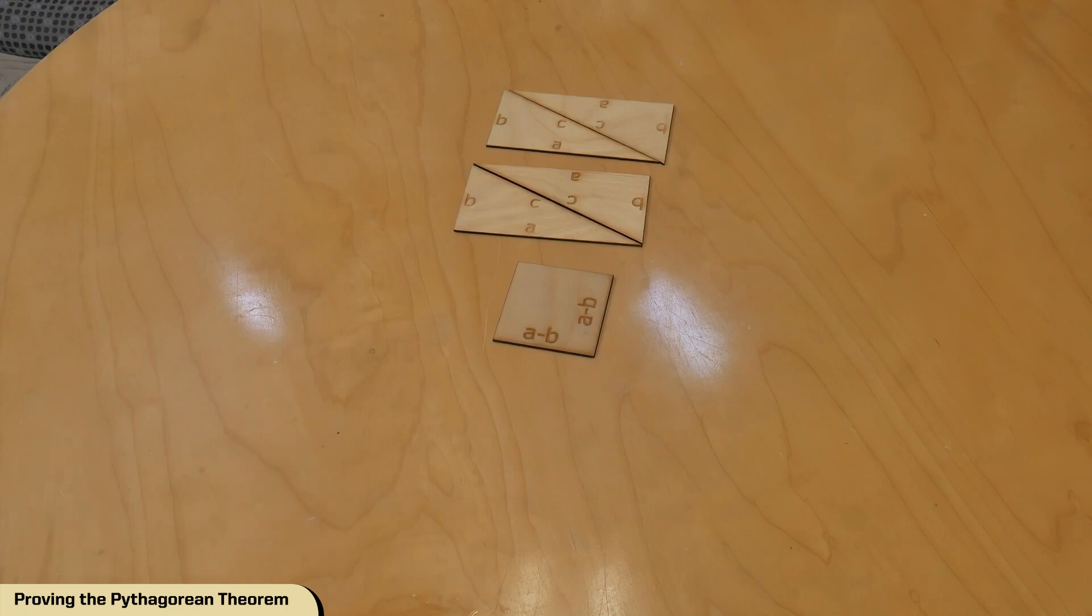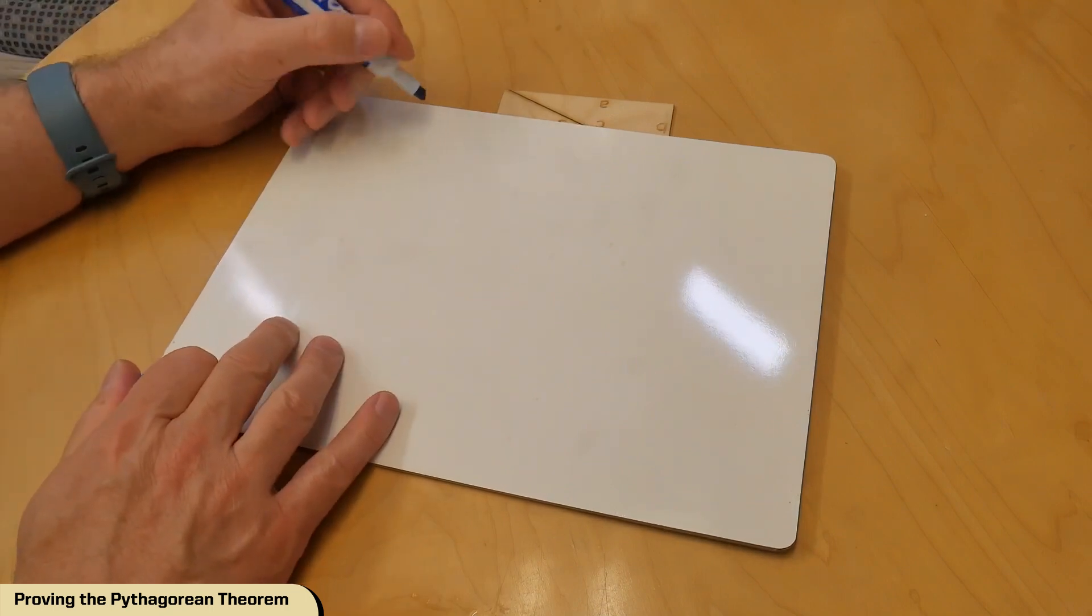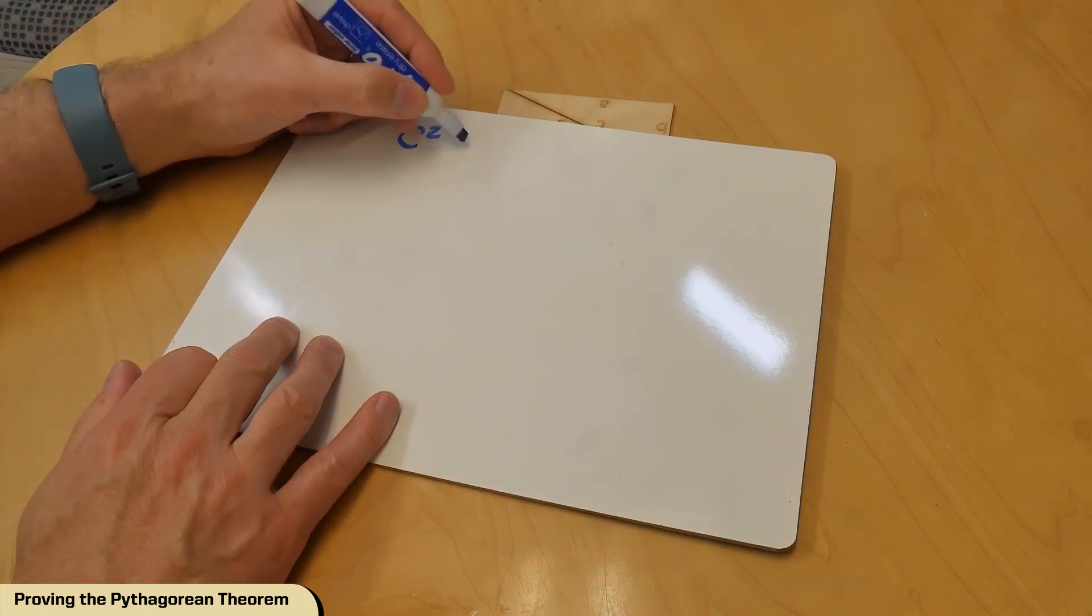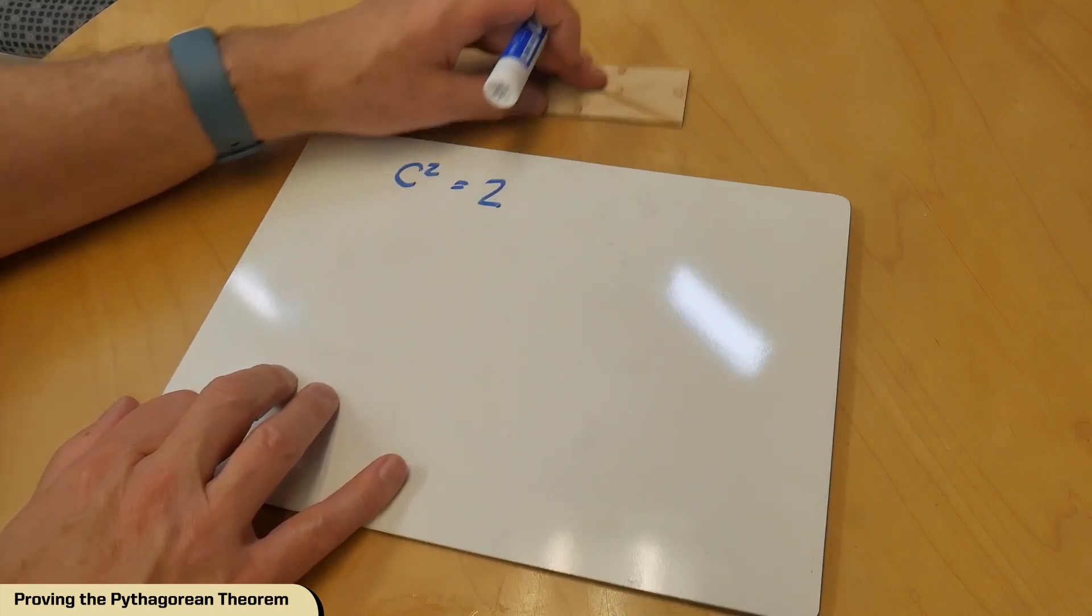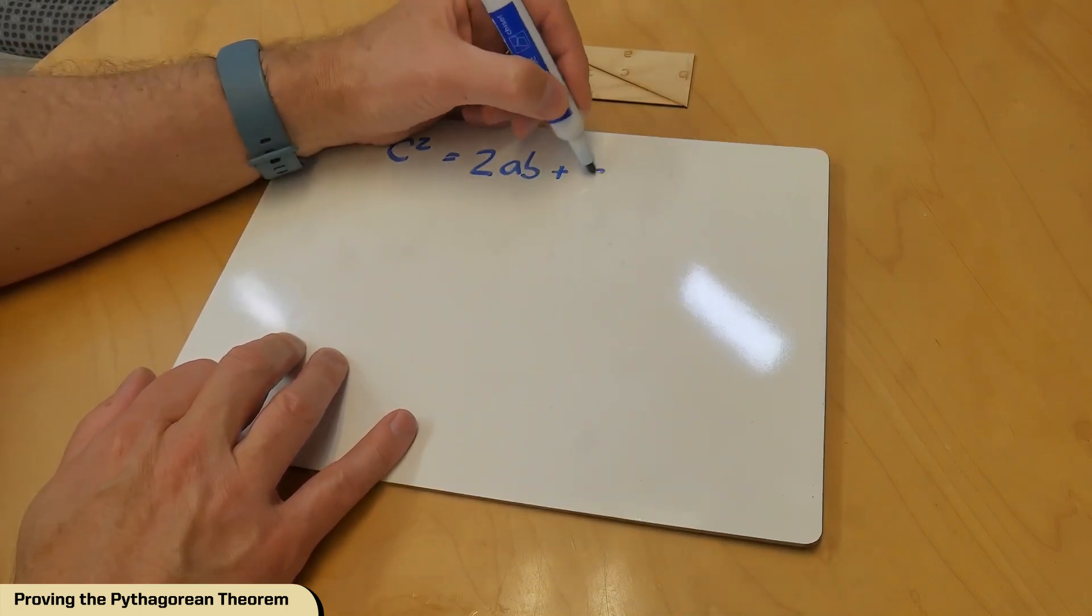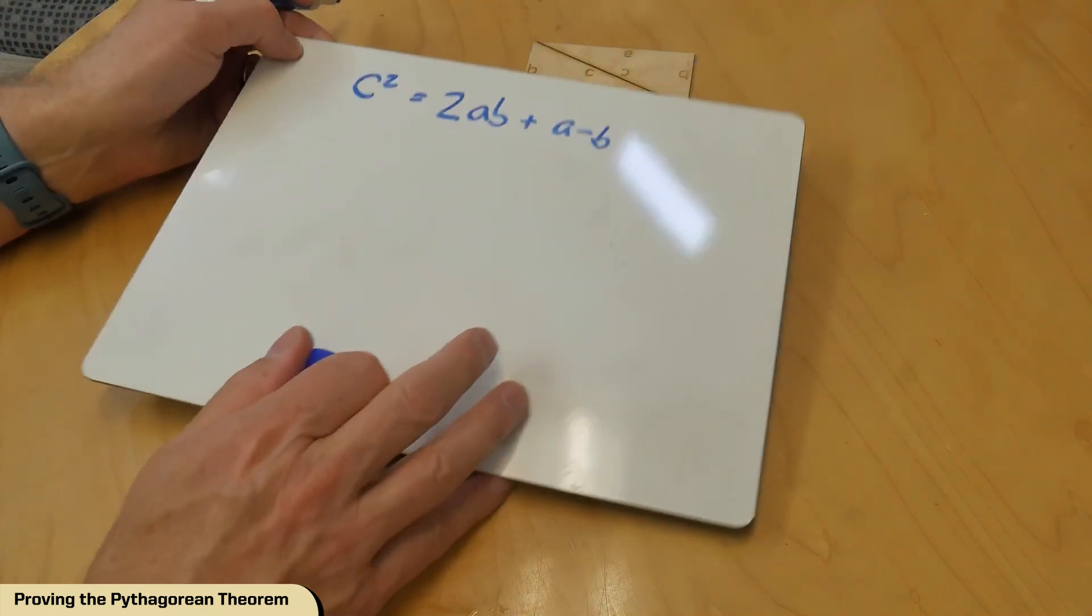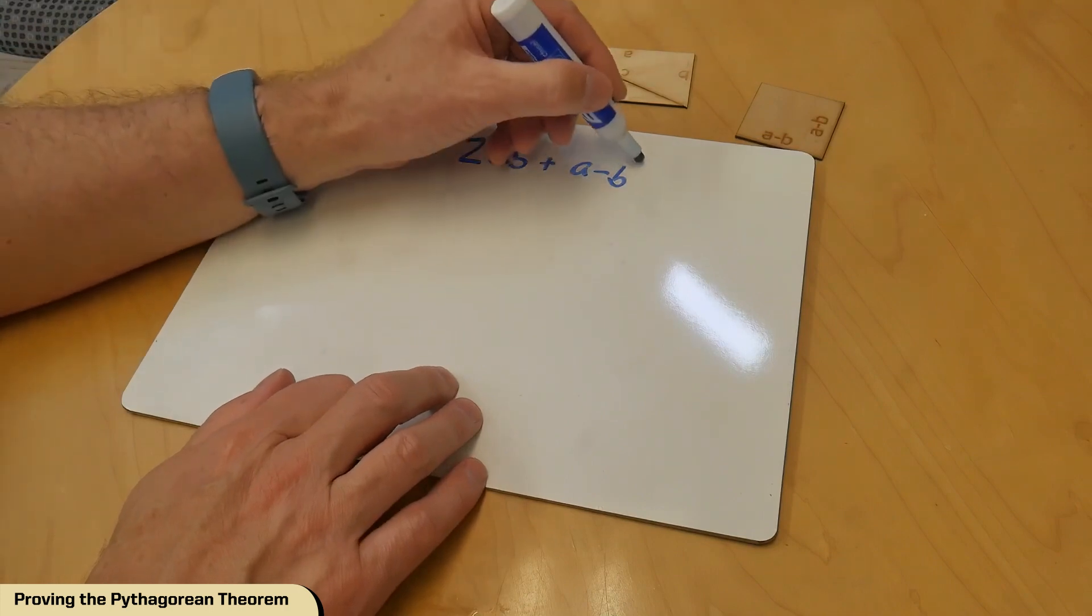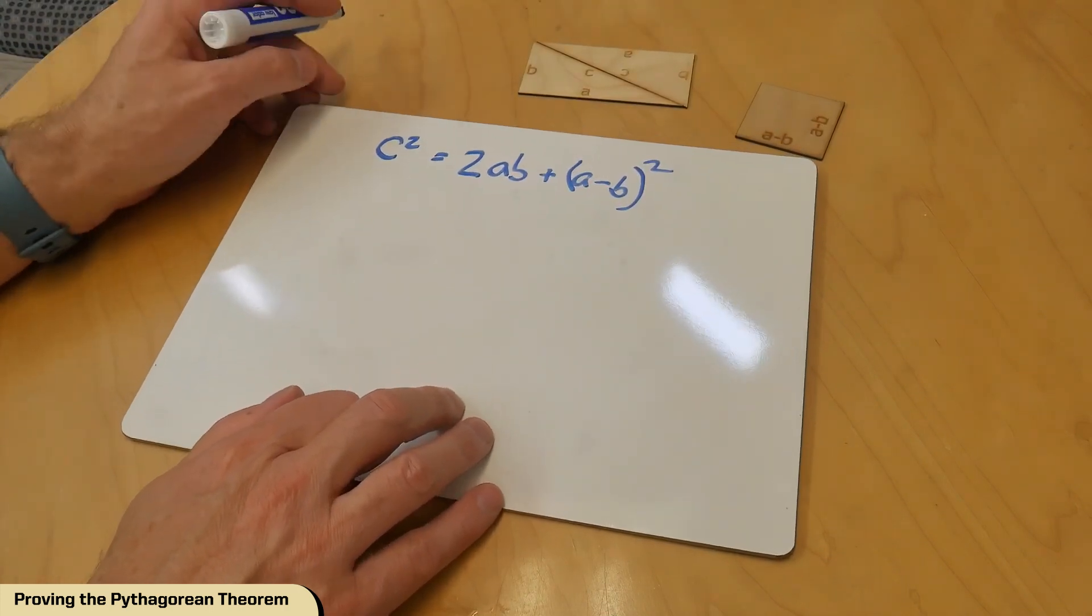Let's try something here real quick. See if I can do this on the table. If I say c squared, which is the area of the big square, is 2 times that, so 2ab plus (a minus b). Let's get that out here: (a minus b) squared.